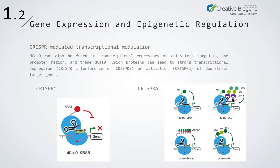dCas9 can also be fused with transcriptional repressors or activators targeting specific promoter regions. These dCas9 fusion proteins can lead to strong transcriptional repression — CRISPR interference (CRISPRi) — or activation (CRISPRa) of downstream target genes.